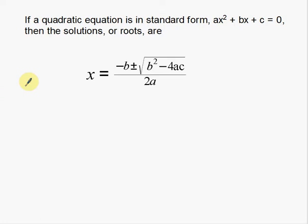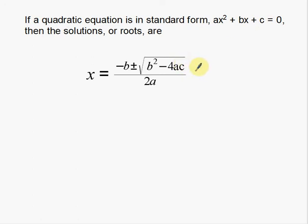Now in the middle of the screen what I have here is the actual quadratic formula. If a quadratic equation is in standard form — ax squared plus bx plus c, with the x squared first, then the b term, then the c term, set equal to zero — then the solutions or the roots are given by this formula. I plug in the a's, b's, and c's, and if I add, subtract, multiply, divide — do all those things correctly — I can find the solutions for any quadratic equation.